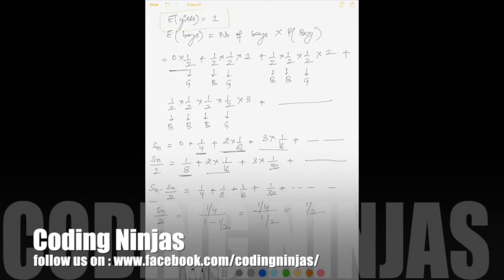So now that becomes Sn by 2 is equal to 1 by 2. That means Sn is equal to 1.